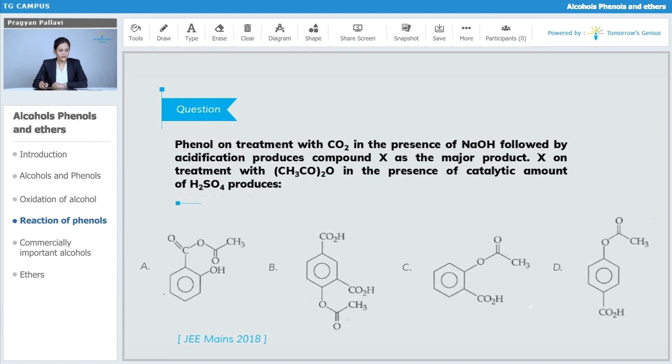Then it is saying that this X on treatment with acetic anhydride. This is acetic anhydride which is CH3-C(=O)-O-C(=O)-CH3. So this is acetic anhydride.